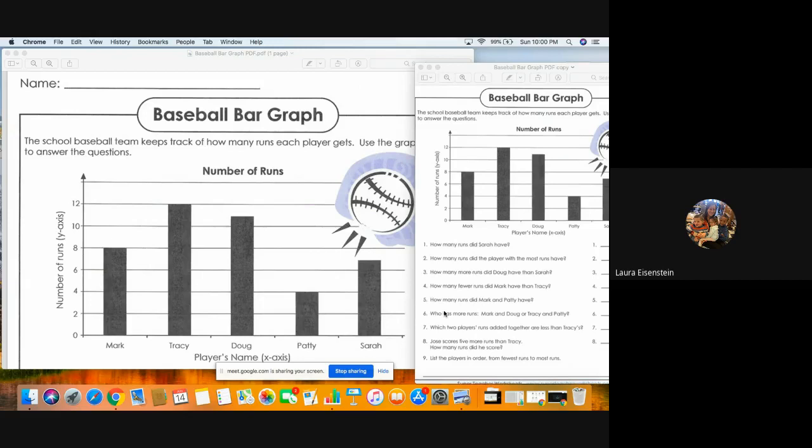Number five, how many runs did Mark and Patty have? So when it asks you how many did Mark and Patty have, when it just says 'and,' they want you to add. So your step one would be figure out how many Mark has and how many Patty has. And then step two would be to add them up.